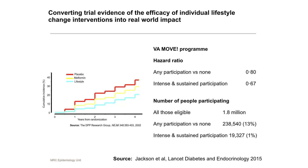We've known for many years that if you take people with prediabetes and randomize them to a lifestyle intervention, the risk of progression to diabetes is halved. That's a very important clinical message, but it comes from a clinical trial. What do we achieve in the real world? Clinical trials tell you about efficacy, but the real world is about effectiveness, and sometimes there's a very big gap between the two.